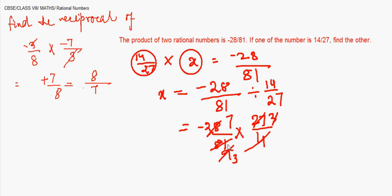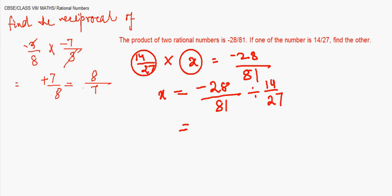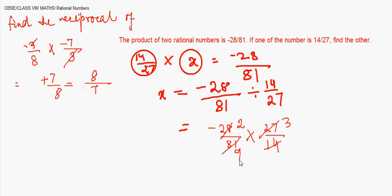Let me redo this part to make sure. We can verify the answer by substituting x back and checking if the product equals -28/81. So: (-28/81) × (27/14) — here 14 × 2 = 28 and 81 ÷ 27 = 3 — giving -2/3. So the other number is -2/3, which when multiplied by 14/27 gives -28/81.